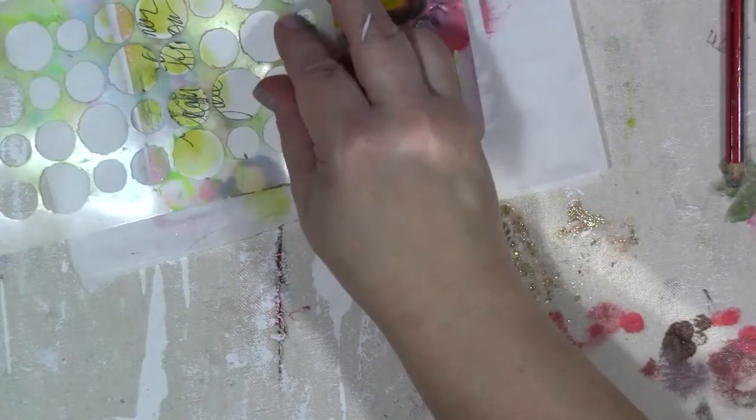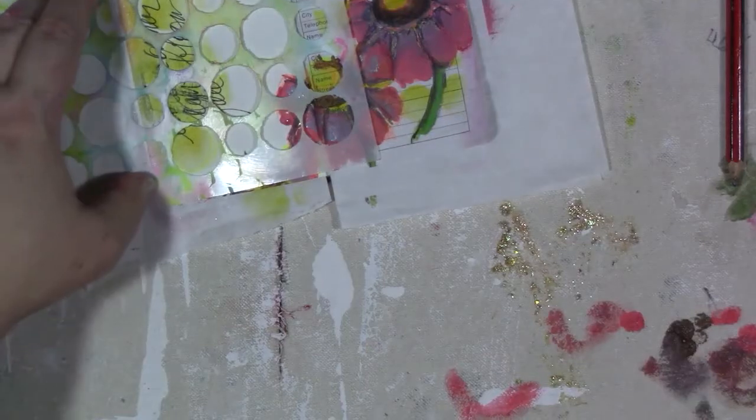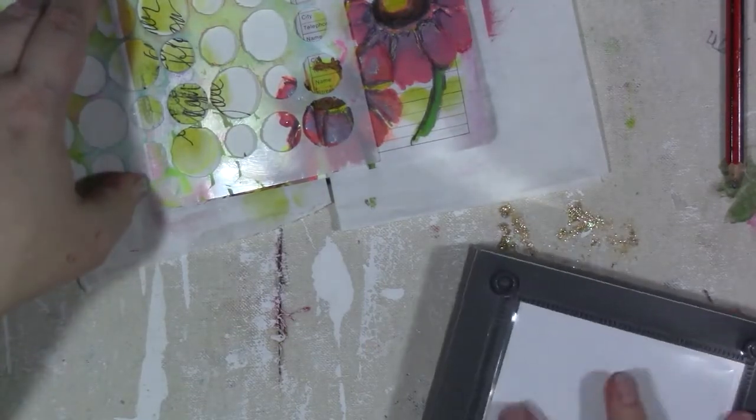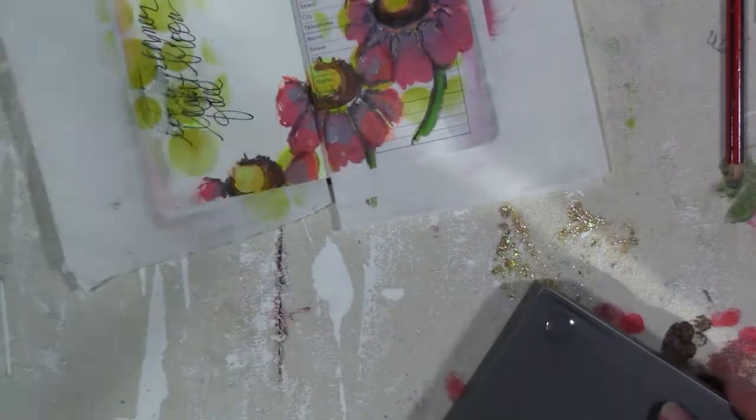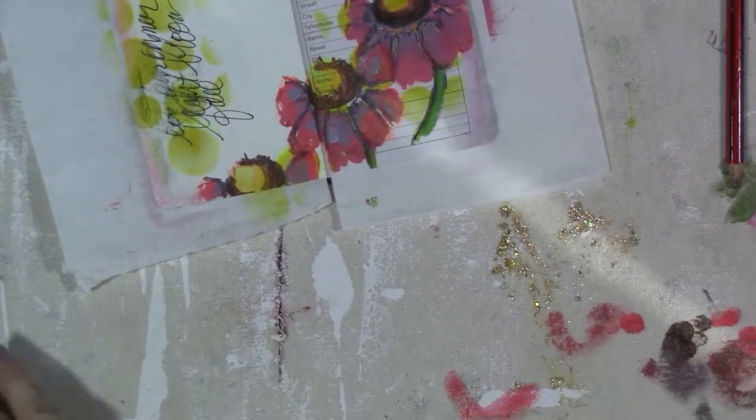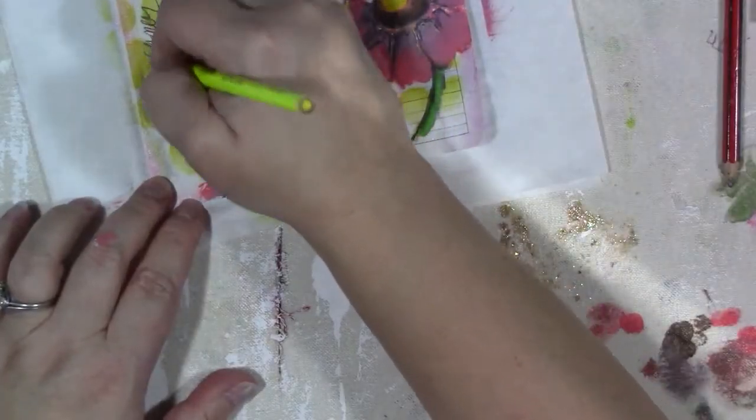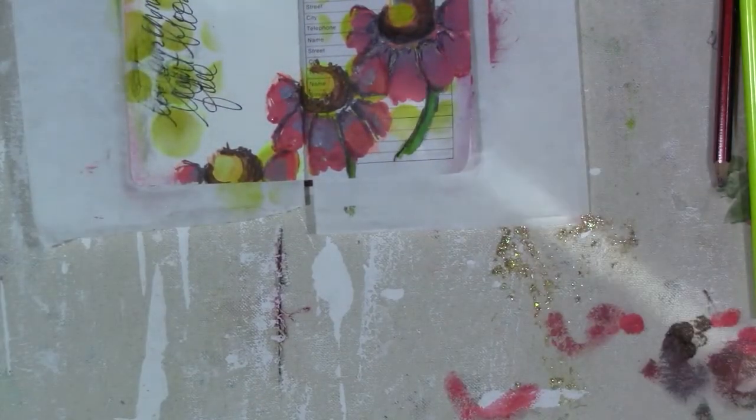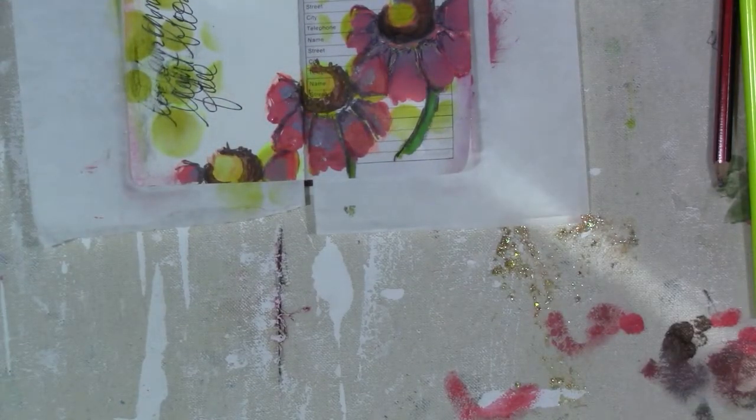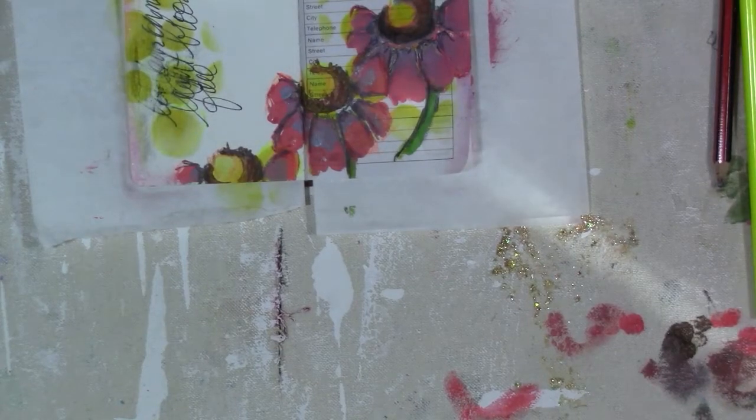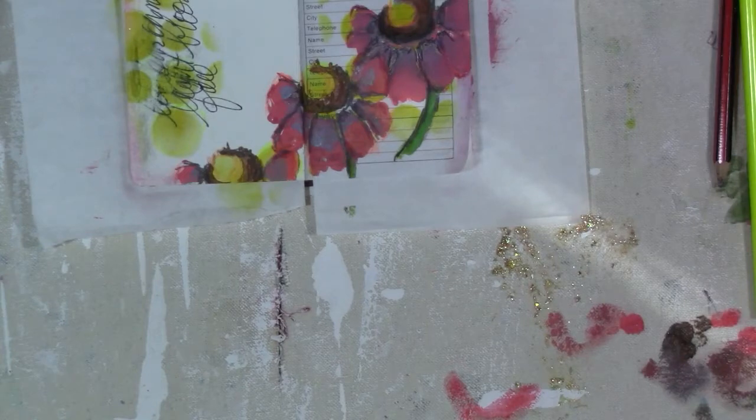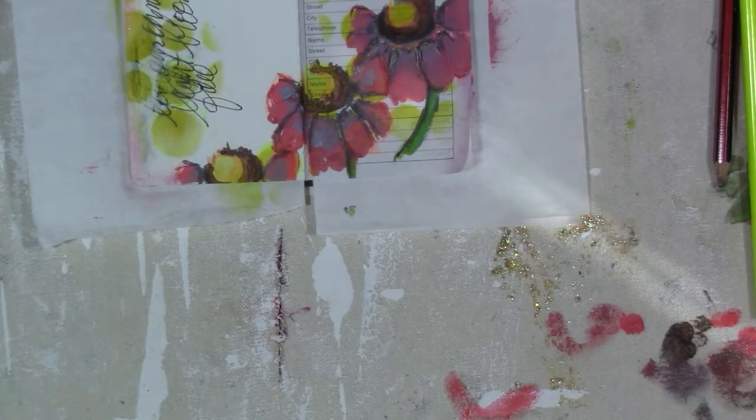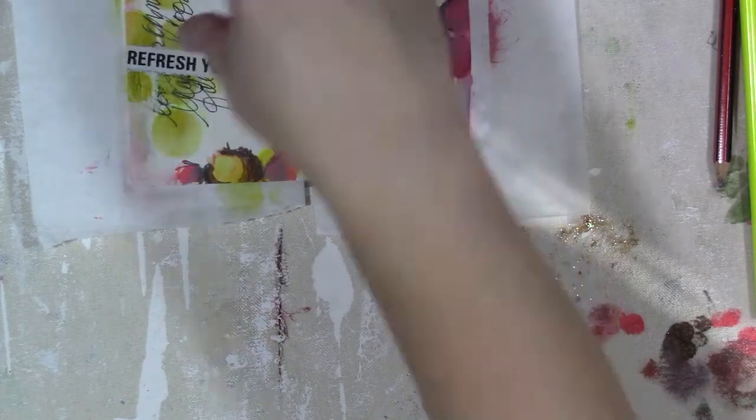So then I think, well, what if I go in with some more distress ink? That doesn't really help. Okay, so what can I do? So then I get out another stencil after I try making marks—that doesn't help either. So I get out another stencil from Tim Holtz. It's a very small dot stencil. I don't remember what the name of it is, and I'm partially off screen so I apologize for that.